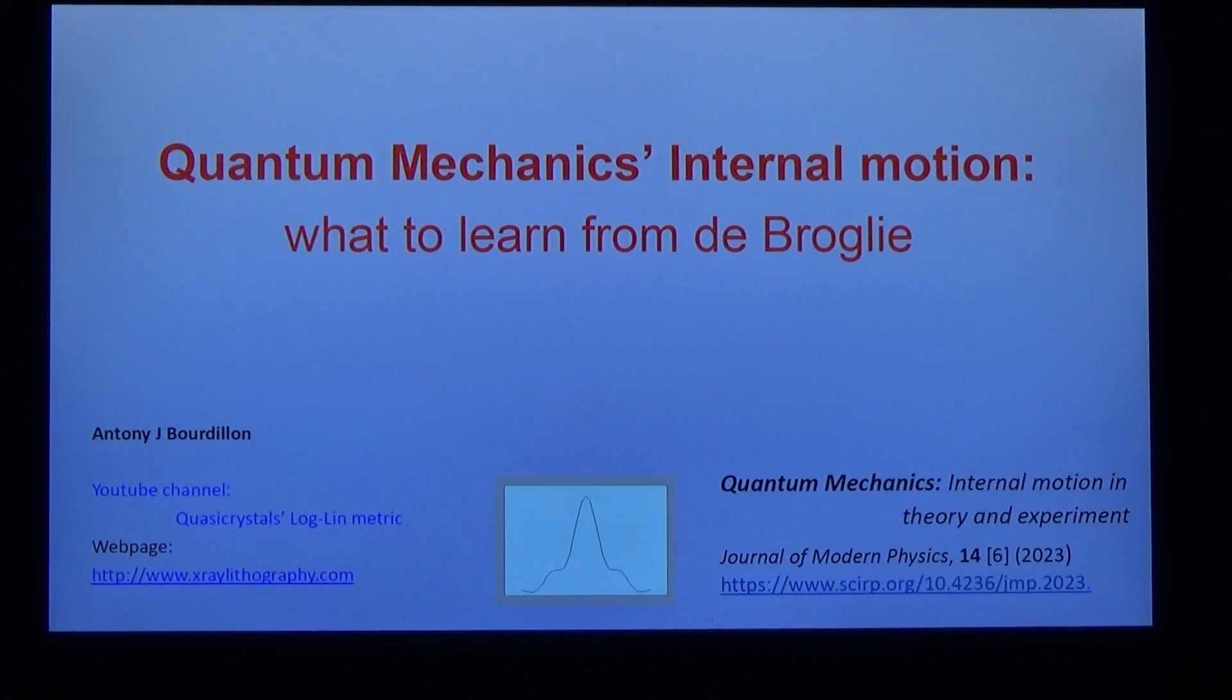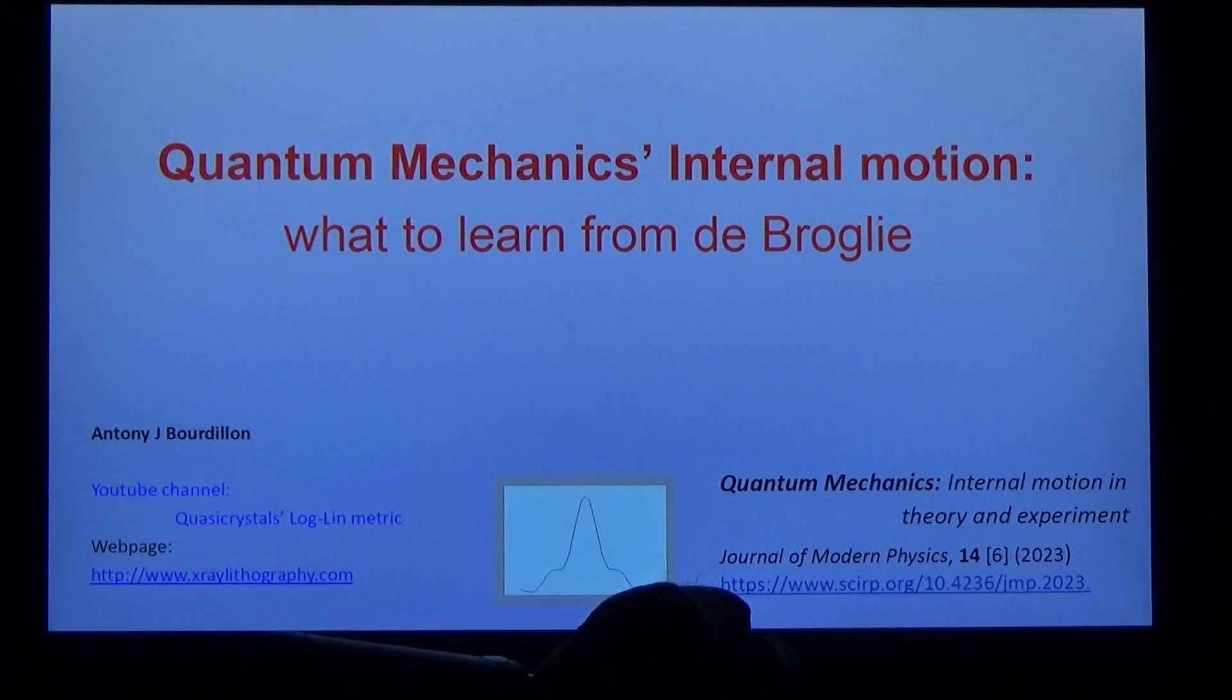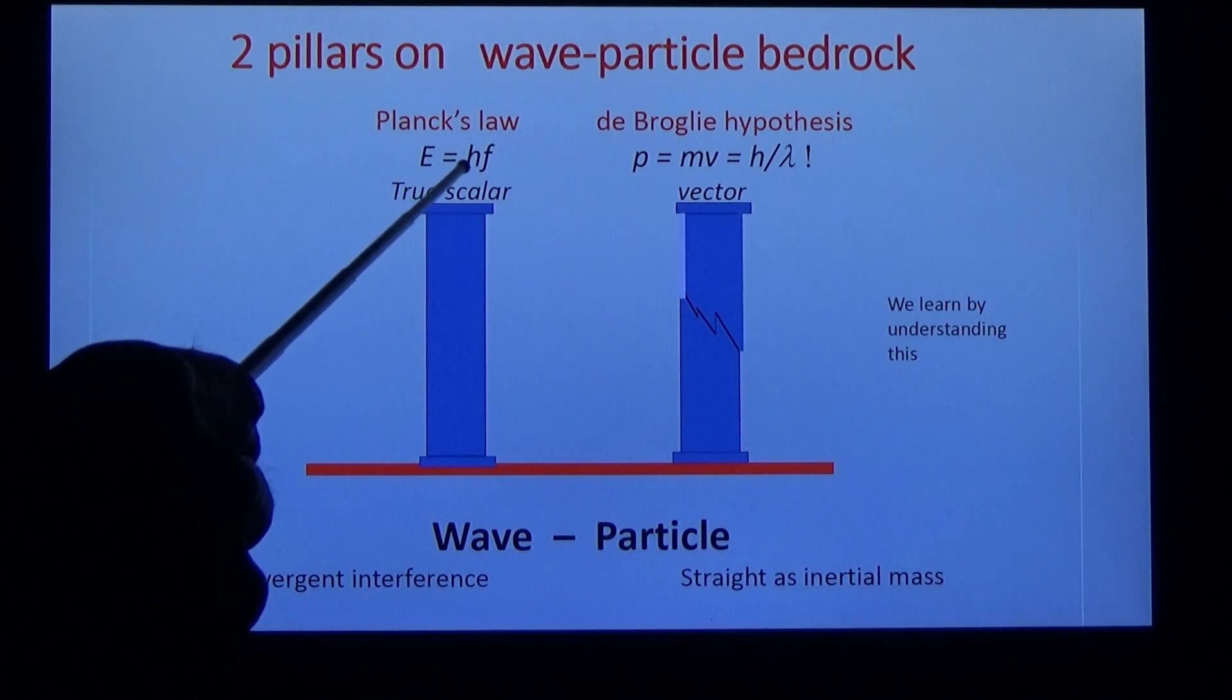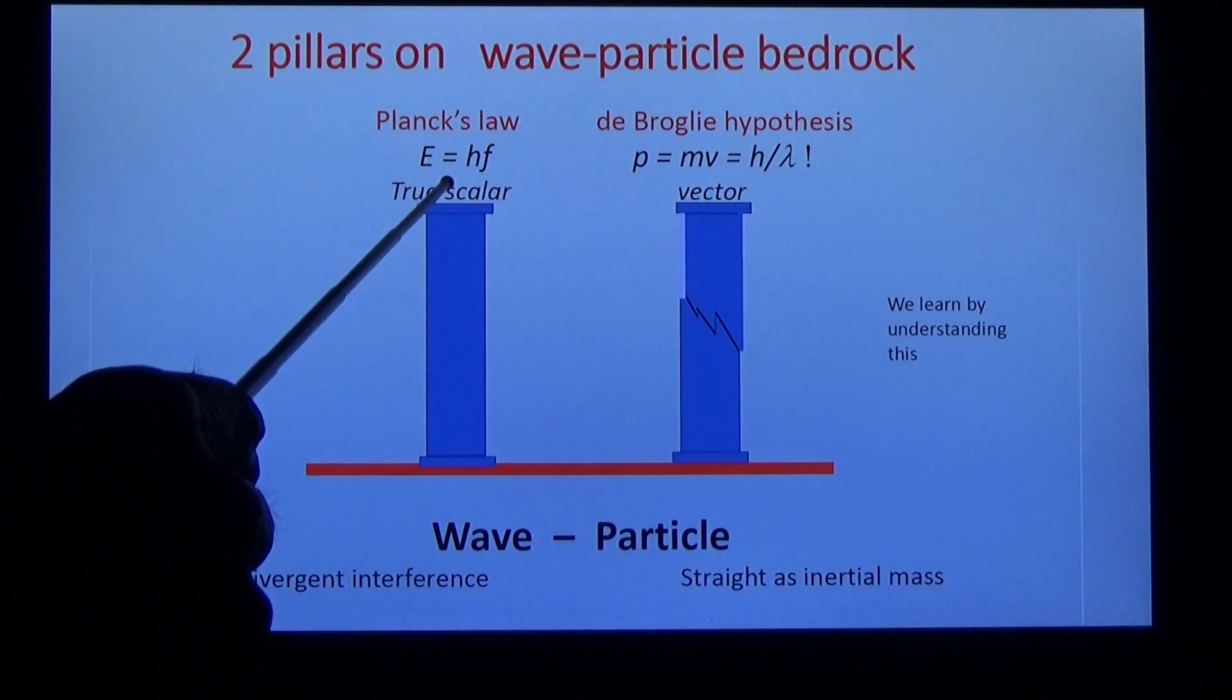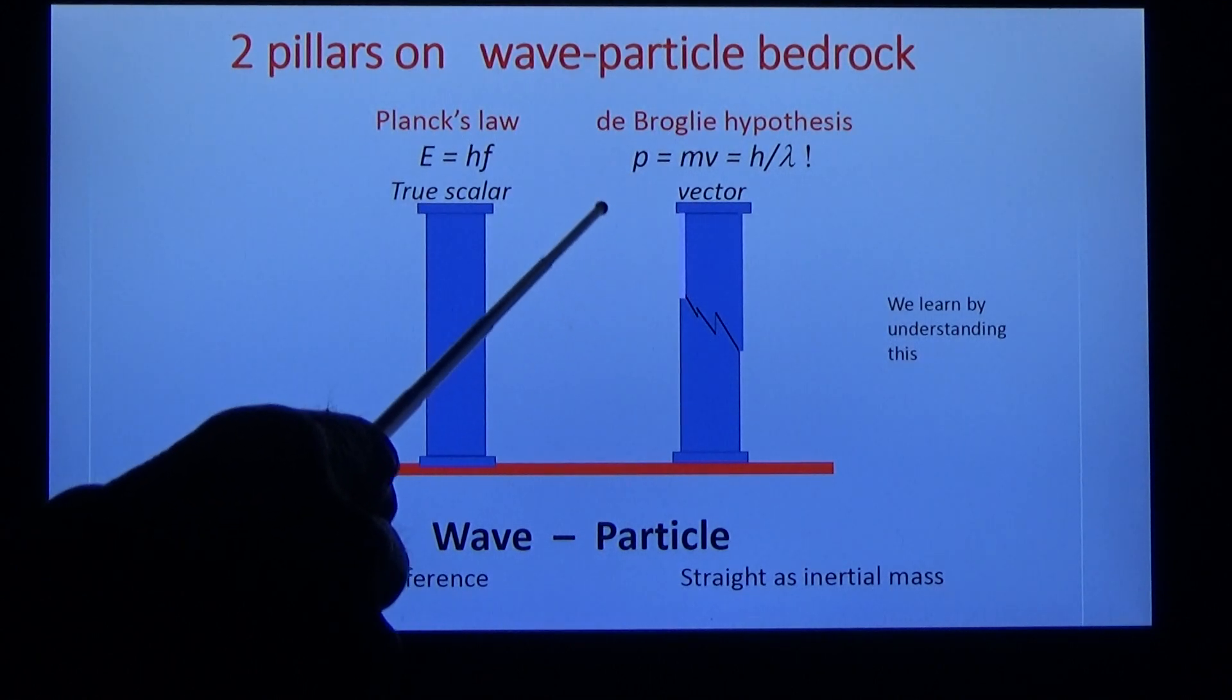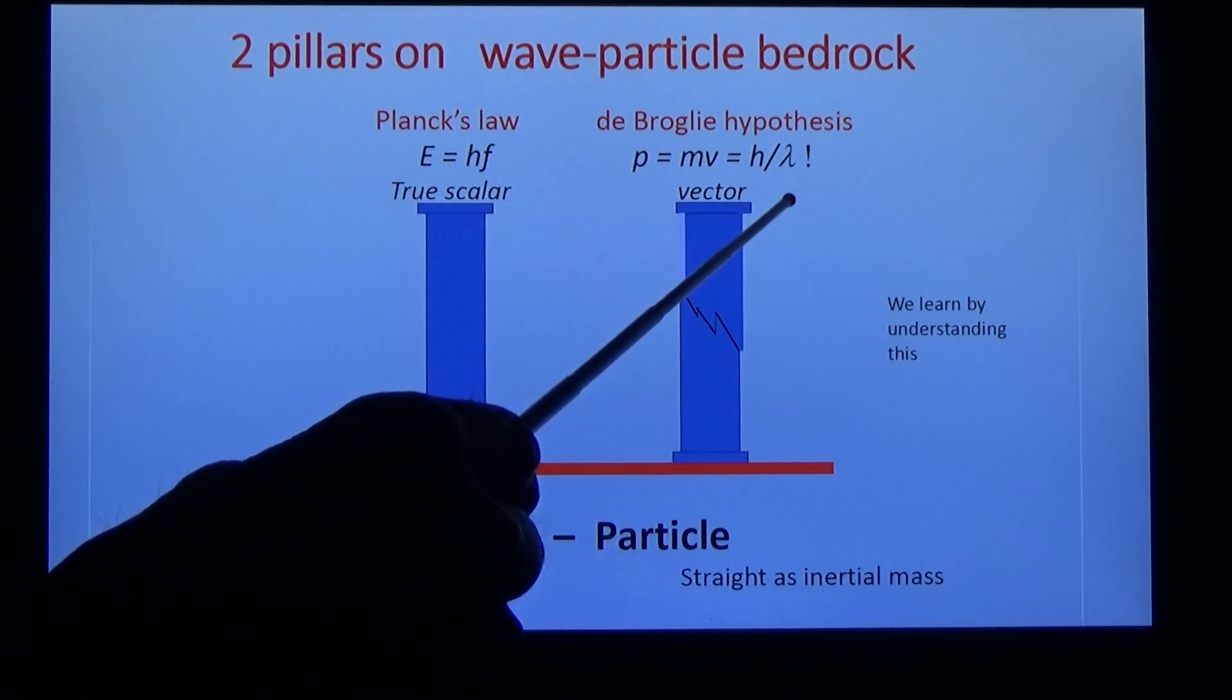Quantum mechanics, internal motion, what to learn from de Broglie recently published. Quantum mechanics is built on wave-particle duality: the wave for interference, the particle for inertia. There are two pillars: Planck's law, energy is proportional to frequency, and de Broglie hypothesis where momentum is inversely proportional to wavelength.